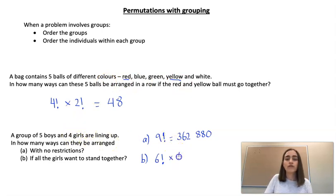So within those four girls we would have 4! different ways of arranging them. So we multiply those together and we'll end up with 17,280.